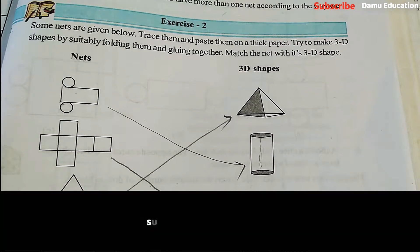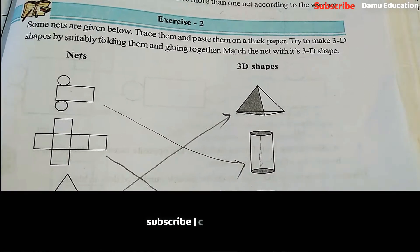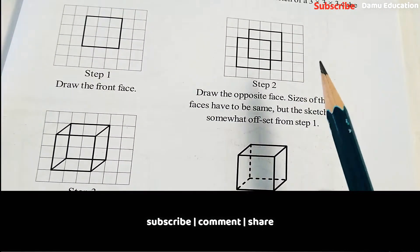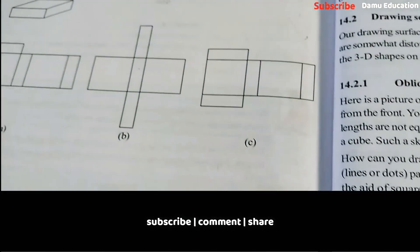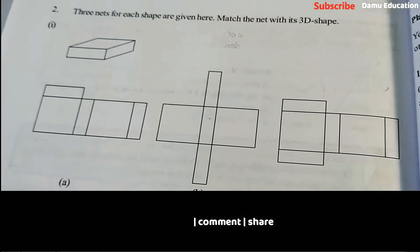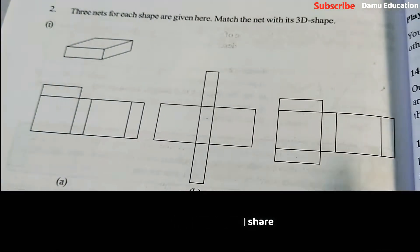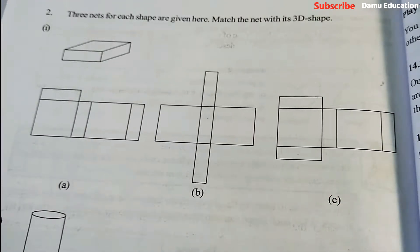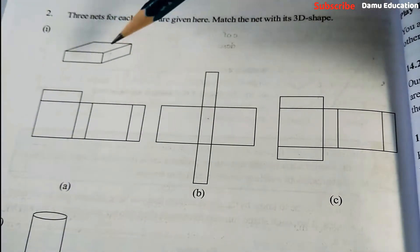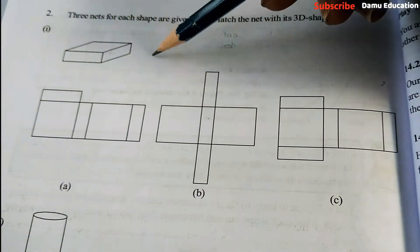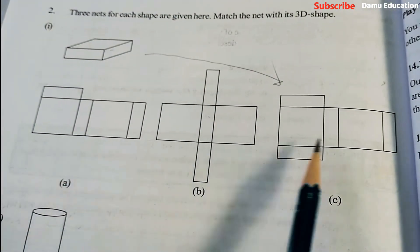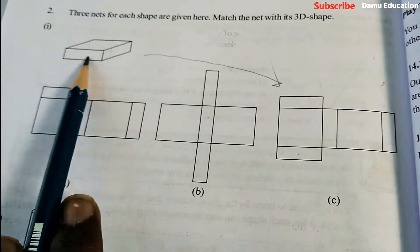Next question. Here three nets for each shape are given. The master shape is here. If you're going to cut this shape it will come as C. It will come like this. Why? Because here you cannot fold. You can fold to two sides like this, but we cannot fold these two things as a cuboid.